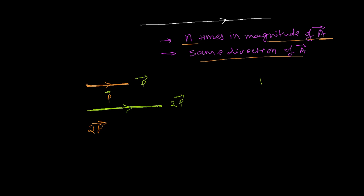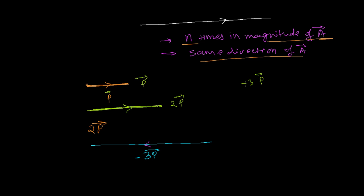What happens if I multiply vector p by minus 3? Minus 3 is also a real number, so it's going to be three times bigger in magnitude. The direction will be just opposite — the minus sign represents the opposite direction — while the magnitude will be three times the magnitude of p. So it's three times bigger than p but in the opposite direction.